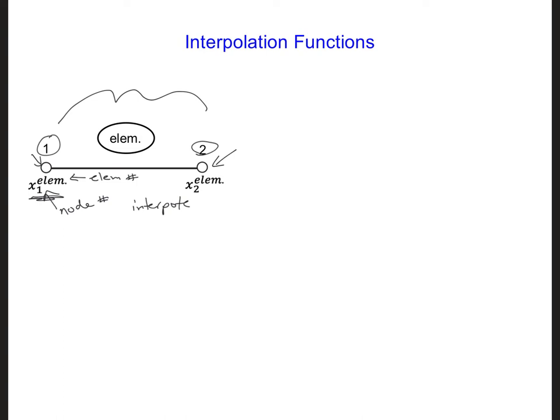Let's call the interpolation functions N, capital N. N1 for the interpolation function corresponding to node 1, and N2 for the interpolation function corresponding to node 2. So the subscript here also refers to the node number. Let's start with the simplest interpolation functions possible, which are just linear interpolation functions of ez between each of the two nodes of the grid.